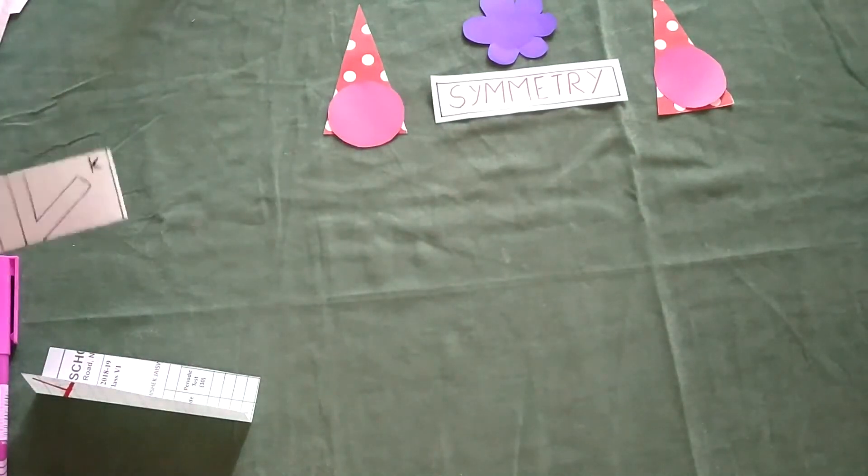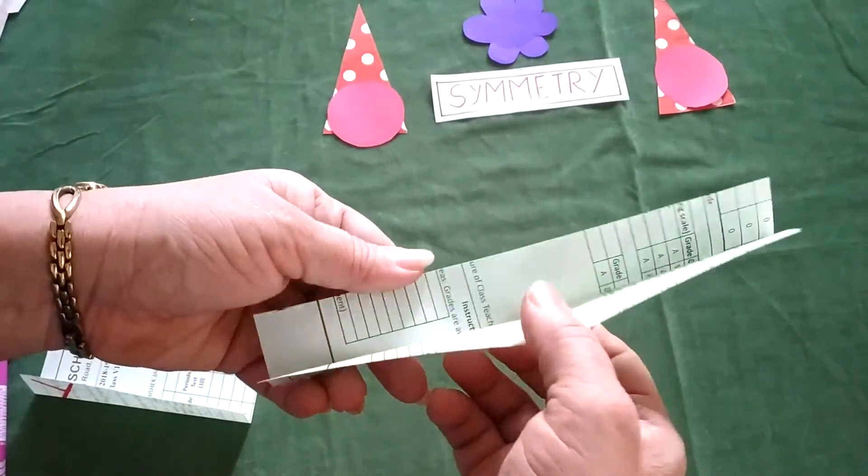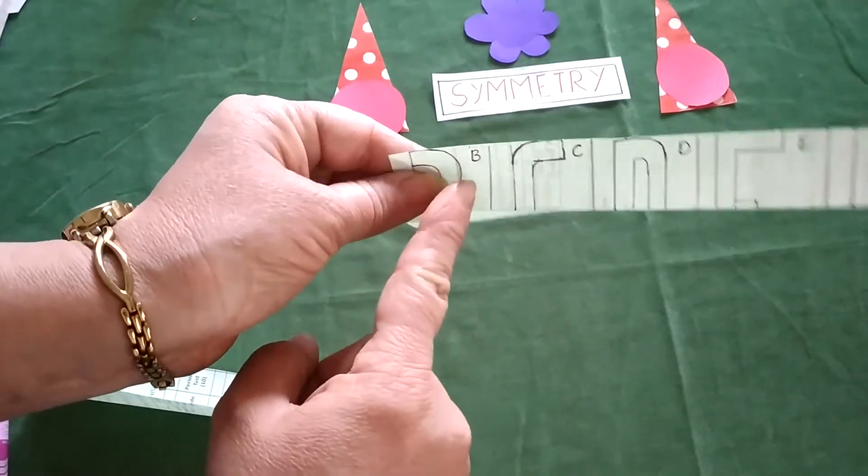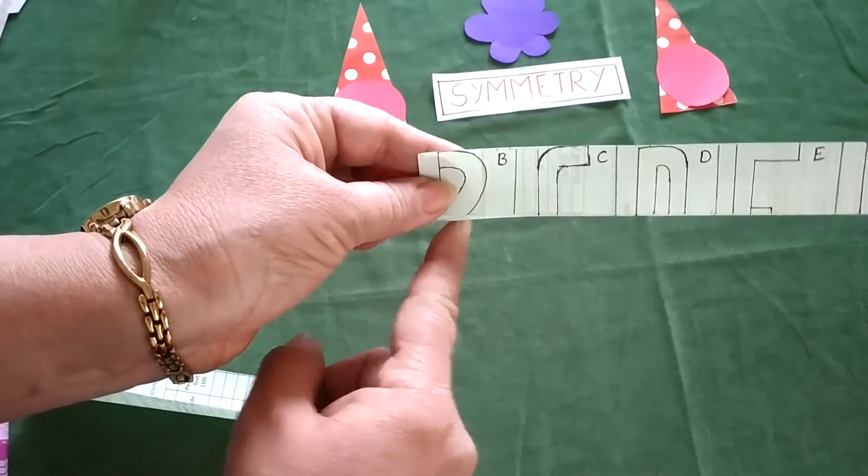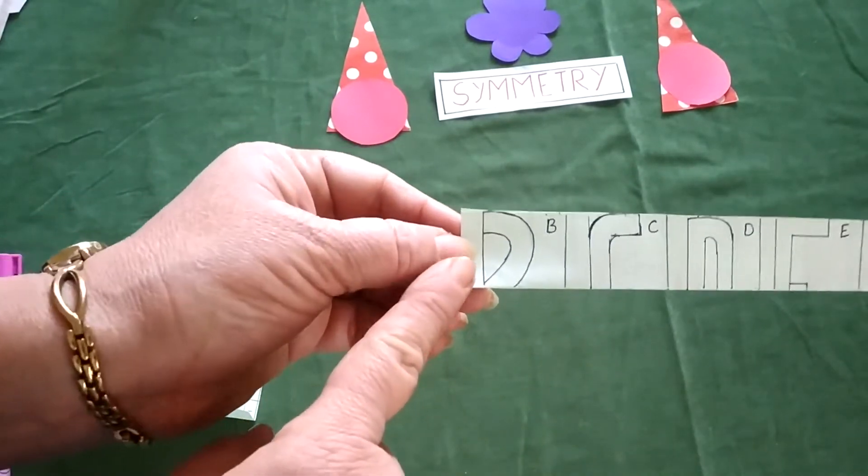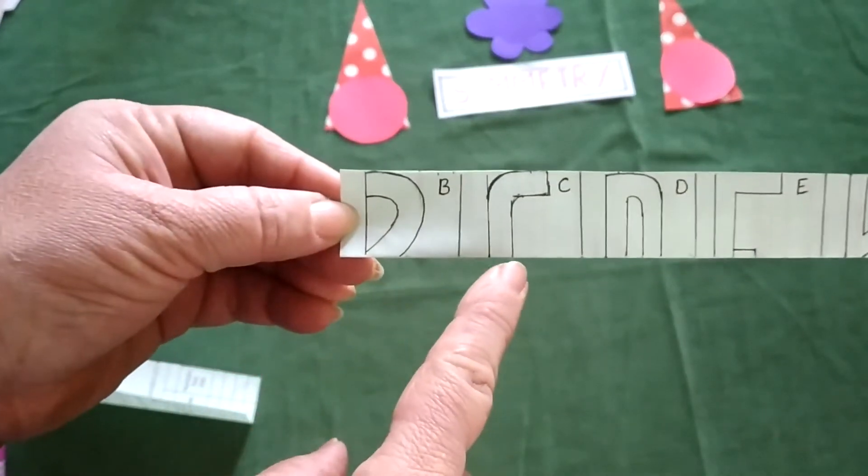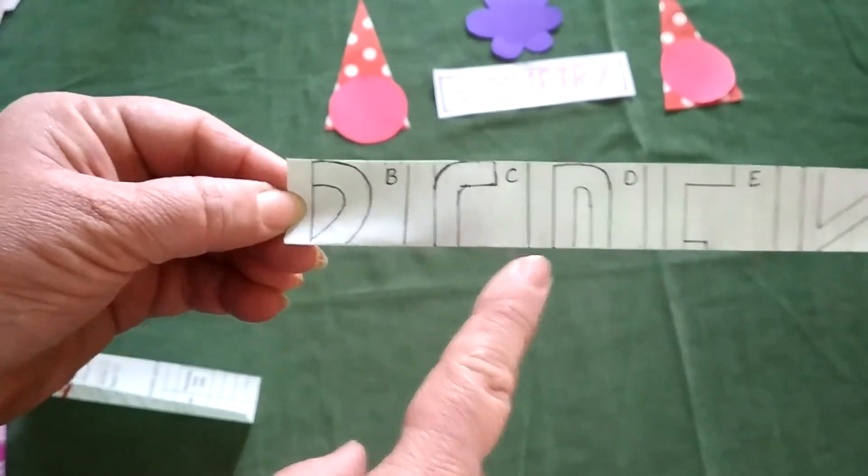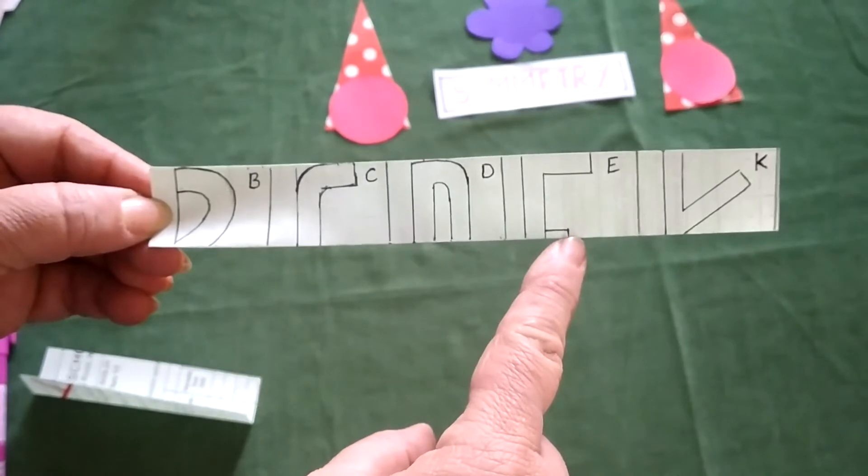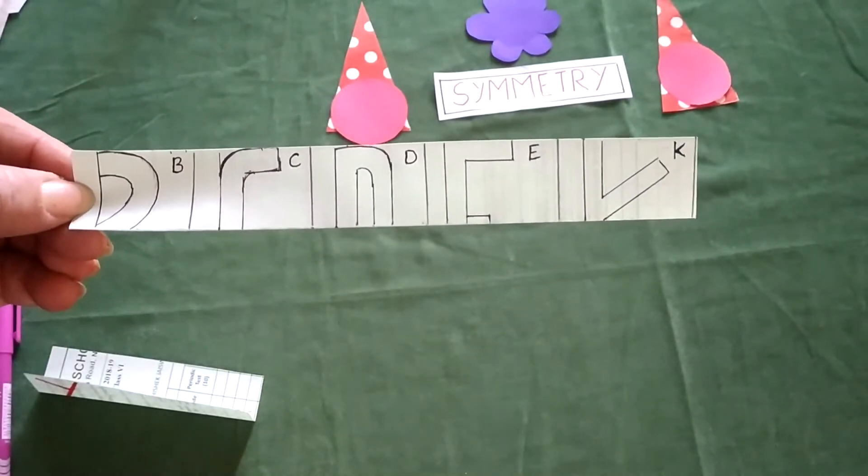Now for horizontal line of symmetry, take another sheet of paper and now fold it along the width. So half letter will be upside and half letter you will get at back. So the first letter that I have written here is B, then C, this is your D, E and the last one is K.